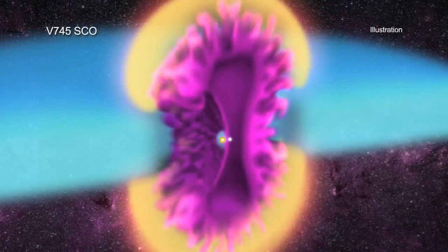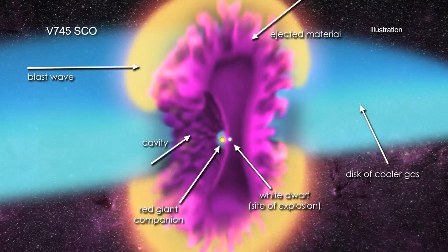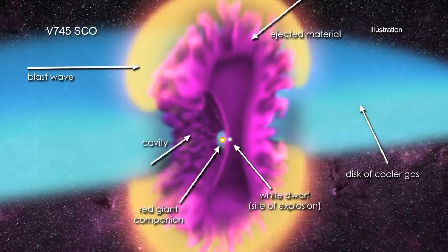This 3D model helps decipher some of the details of this system, including the presence of a disk of gas around the orbiting stars, and how the blast wave moves out into space.